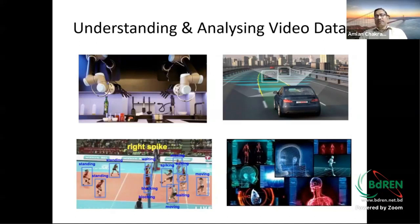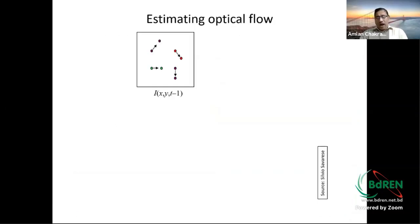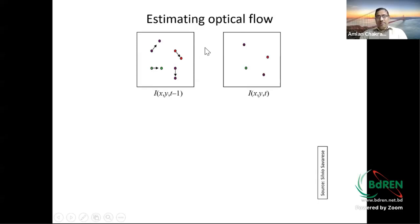Medical imaging also uses video analysis, as many non-rigid body organs are analyzed through video. In video, we try to understand an extra feature: the temporal feature — how much object information changes with time. An object located at temporal interval t-1 may have shifted at time t; this extra feature must be extracted when doing video analysis with deep networks.